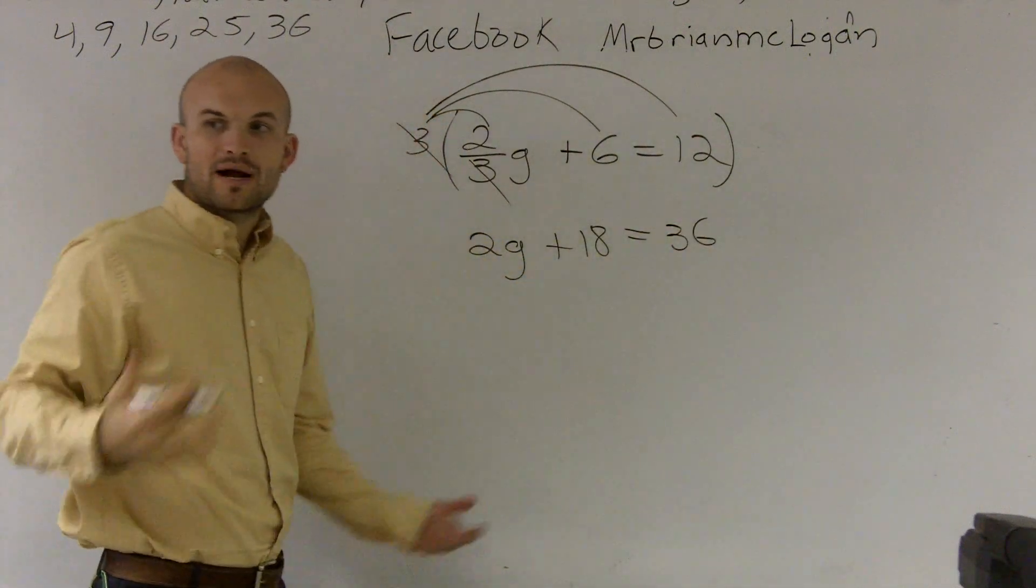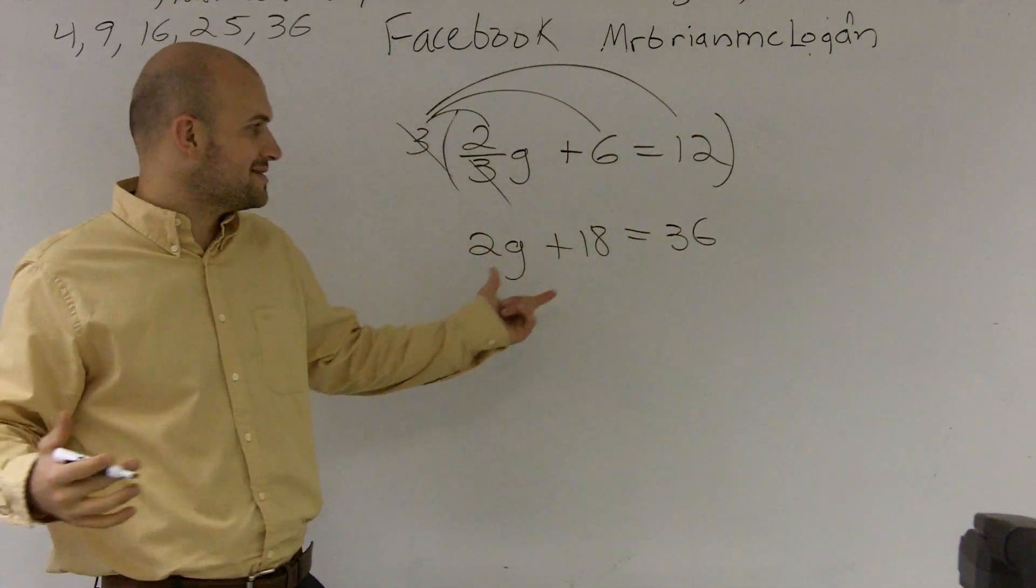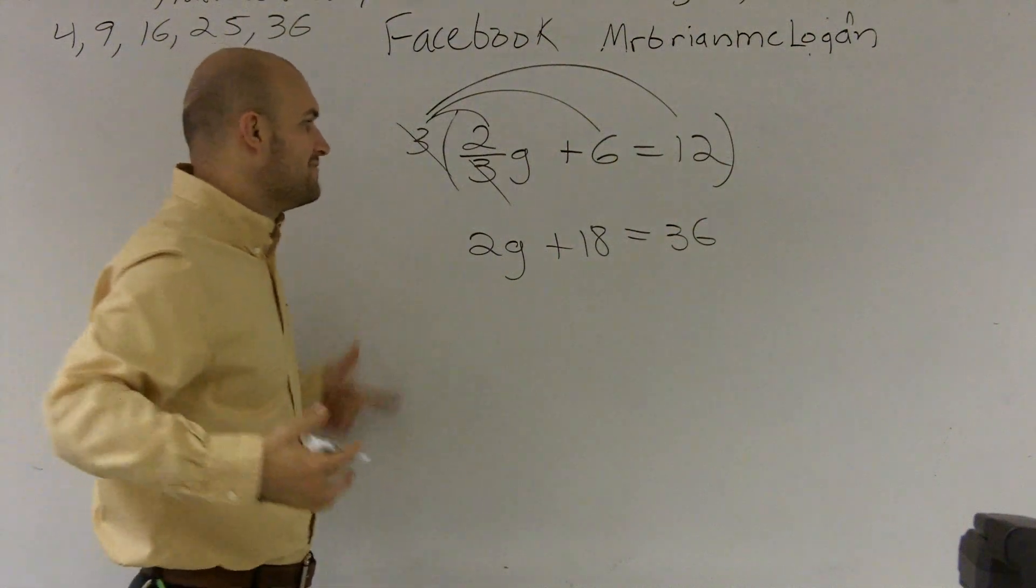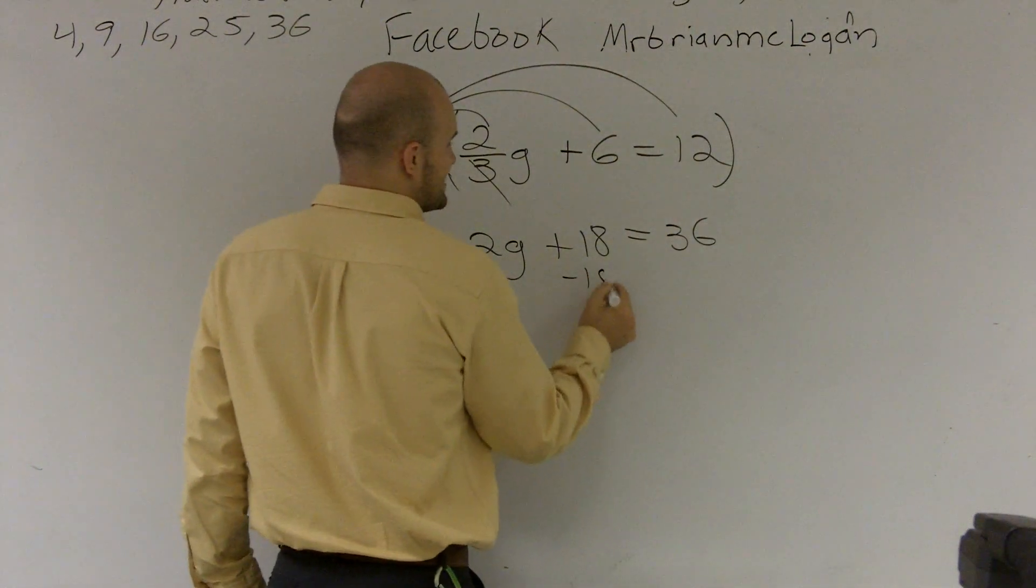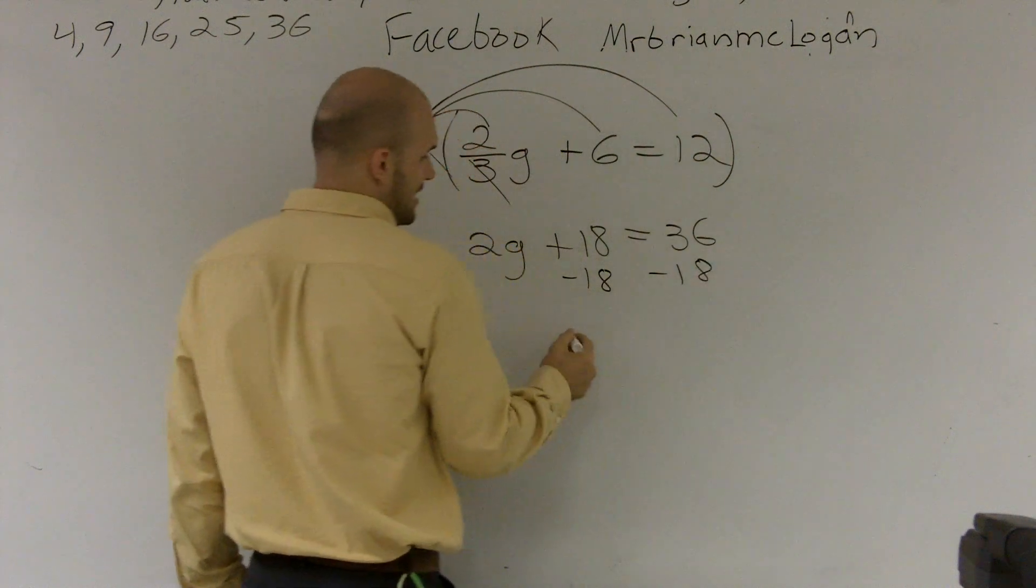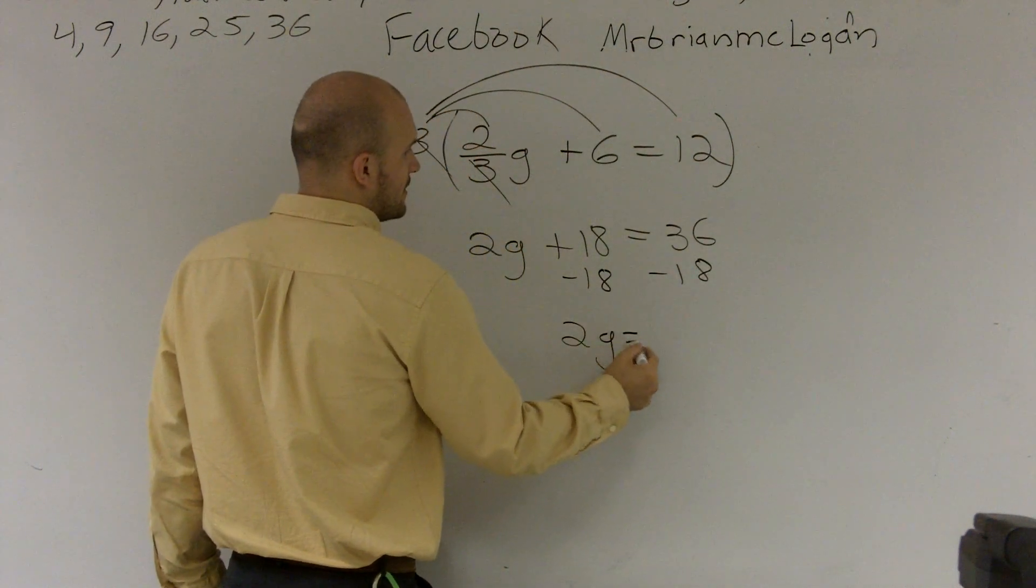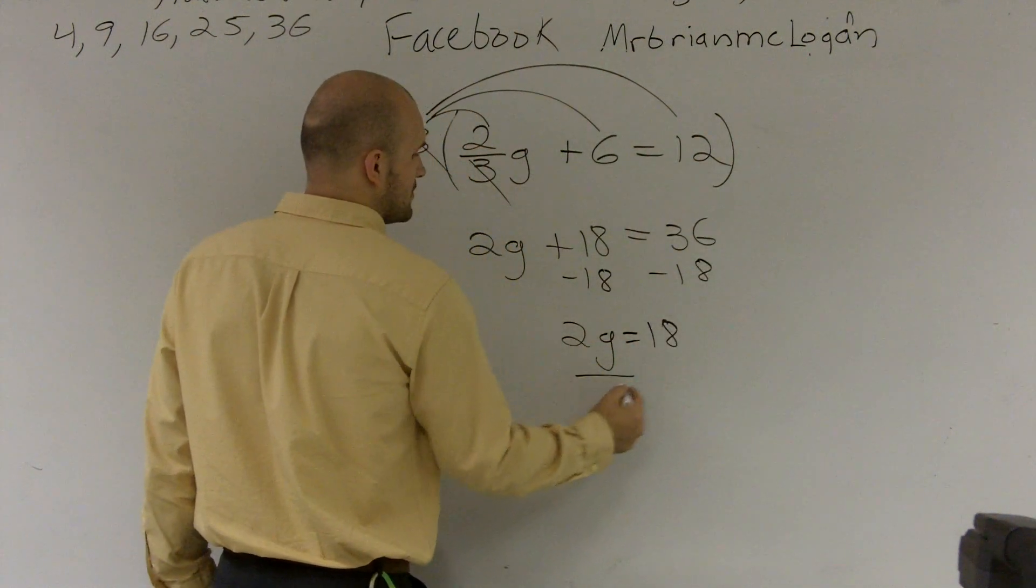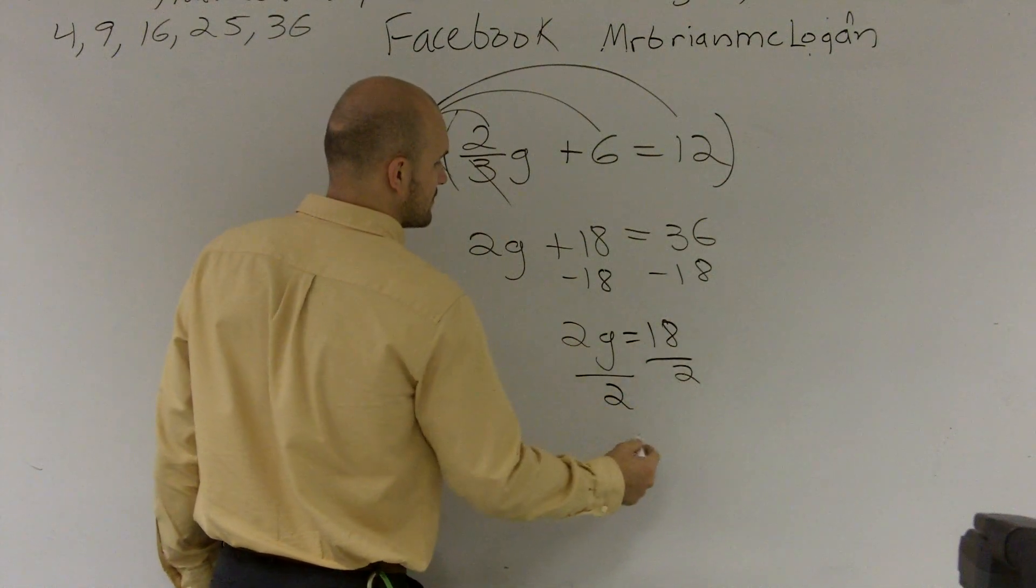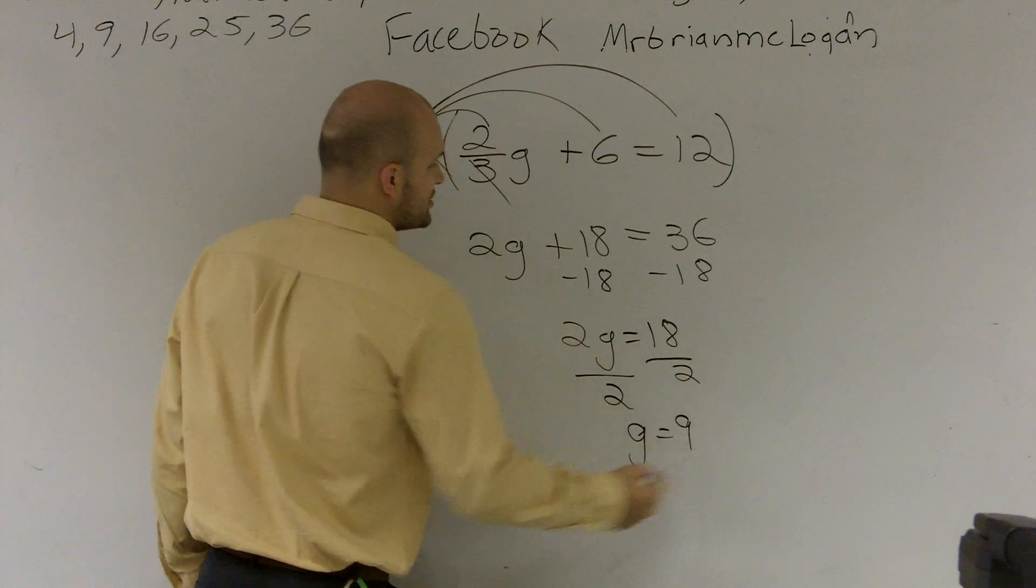Now I have a problem that I can solve without having to use any fractions. So I can subtract 18 and I'm left with 2g equals 18 divided by 2, and g equals 9.